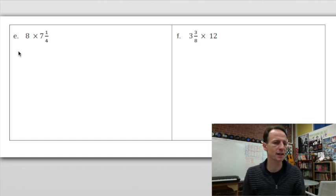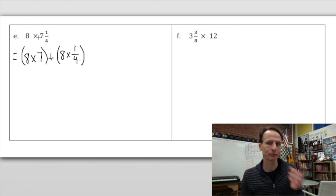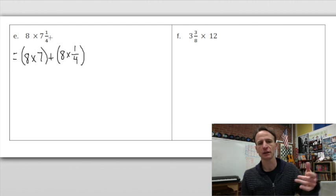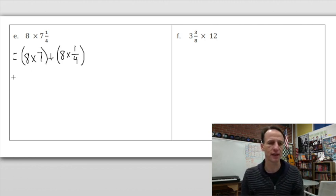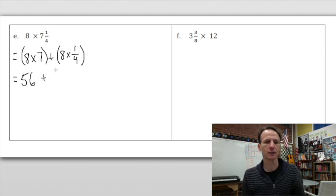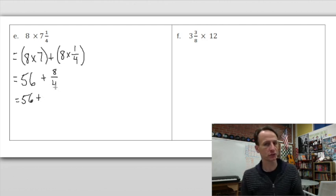Here we are again: eight times seven and one-fourth. All right, this is just practice at this point, right? We're going to distribute out the whole numbers: eight times seven, and then eight times one-fourth. I like this way of doing this, by the way, because the most common mistake students make is forgetting to multiply the fraction by the whole number. So distributing it out this way leaves nothing in doubt. It's a good method. I like this. So eight times seven is 56, eight times one-fourth is eight-fourths.